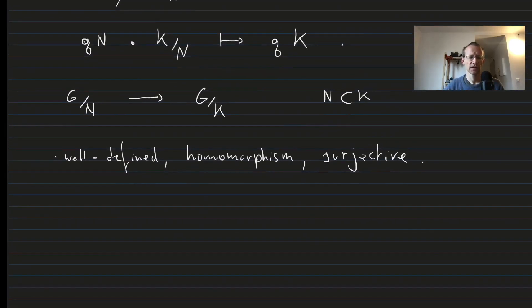Since it is surjective and a homomorphism, what we want to study is its kernel. So what is its kernel? Its kernel is clearly all elements of K, but all elements of N are trivial, so therefore its kernel is K over N.